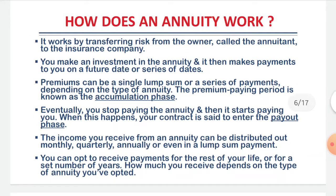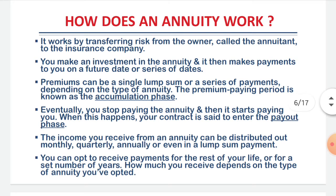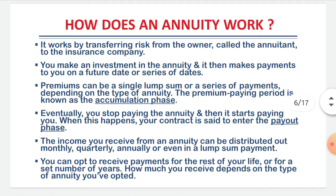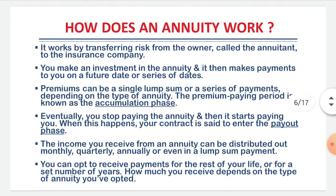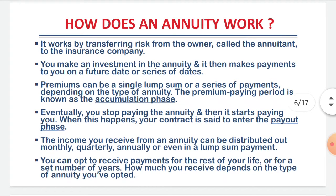Let's see how an annuity works. It works by transferring the risk from the owner, i.e. the annuitant, to the insurance company. Once you make an investment in annuity, it makes payments to you on a future date. The premium paying period, or the period in which you make installments, is known as the accumulation phase. The period in which you start getting the returns is known as the payout phase.